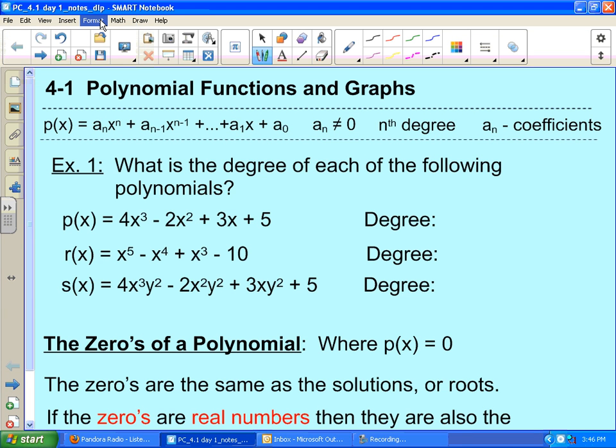All right, we're going to start chapter 4, and the first section is 4-1 polynomial functions and graphs. We're going to take a look at different kinds of functions besides the ones we've been dealing with - quadratics, linears, absolute values. We're going to take a look at what happens when that power gets to be a little bigger.